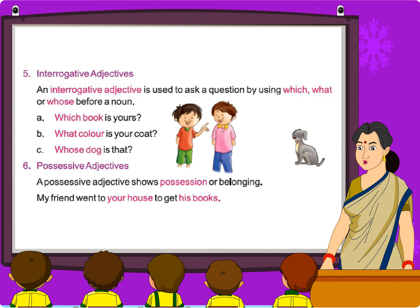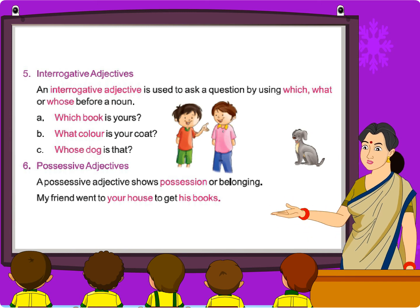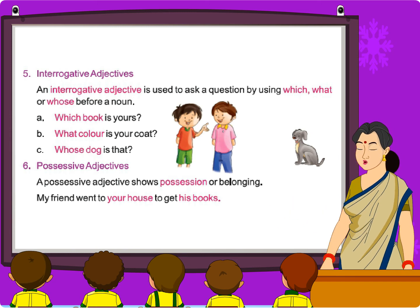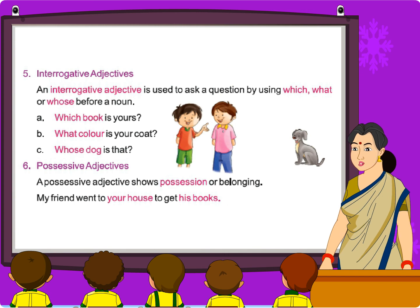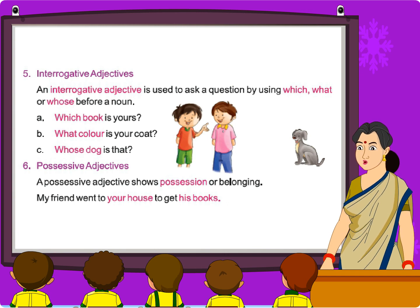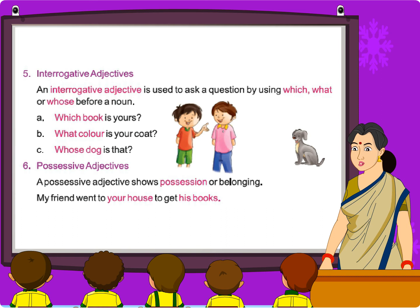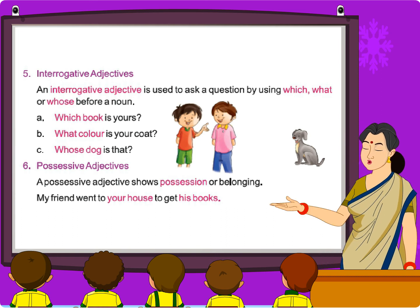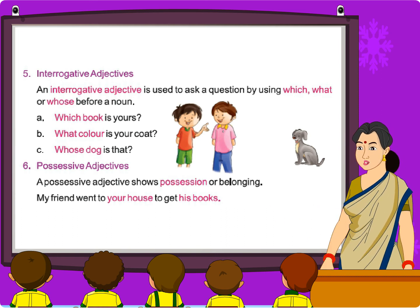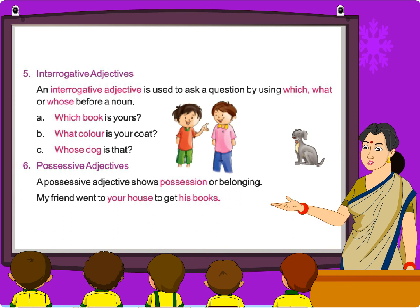Interrogative adjectives. Interrogative adjectives are used to ask a question by using which, what, or whose before a noun. For example: 'Which book is yours?' 'What color is your coat?' 'Whose dog is that?'